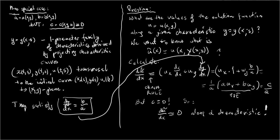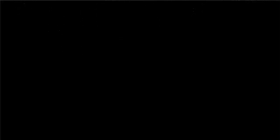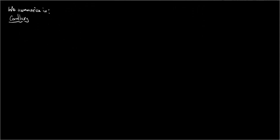Function U twiddle is constant along the characteristics. We summarize our considerations in the following corollary: Every solution of our PDE is constant along characteristics.